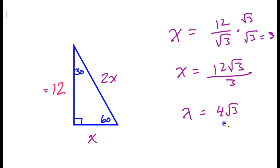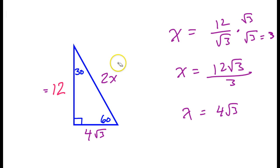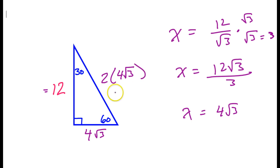I just found x, the short leg, which is 4 radical 3. The hypotenuse has got to be double that — in other words, 2 times 4 radical 3, so that would be 8 radical 3.